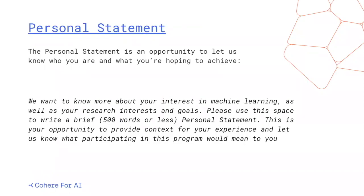The personal statement is the written response portion of the application — an opportunity to let us know who you are and what you're hoping to achieve. We want to know about your interest in machine learning and your research interests and goals. Please write a brief personal statement of 500 words or less, providing context for your experience and letting us know what participating in the program would mean to you. 500 words is pretty tight, so you need to be efficient and really clear. Sometimes writing short is a lot harder than writing long.